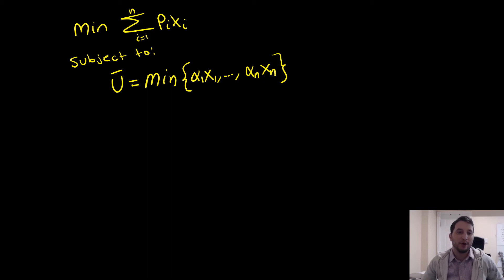Hey guys, what's up? Welcome to this video where we're going to be discussing expenditure minimization with n-goods where our utility constraint is the Leontief or perfect complements.